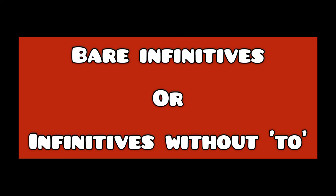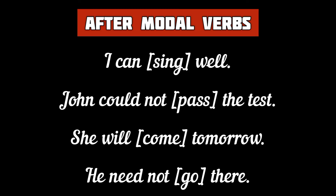Now let's learn about bare infinitives. We know that 'to' plus the first form of the verb is called the infinitive. However, in certain cases, the characteristic 'to' is not used before the first form of the verb — such infinitives are called bare infinitives. For example, the bare infinitive is used after modal verbs. See, pass, come, and go are all bare infinitives coming after the modals can, could, will, and need respectively.